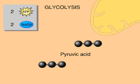For each glucose molecule broken down during glycolysis, a net of two ATPs are formed, along with two NADH molecules.